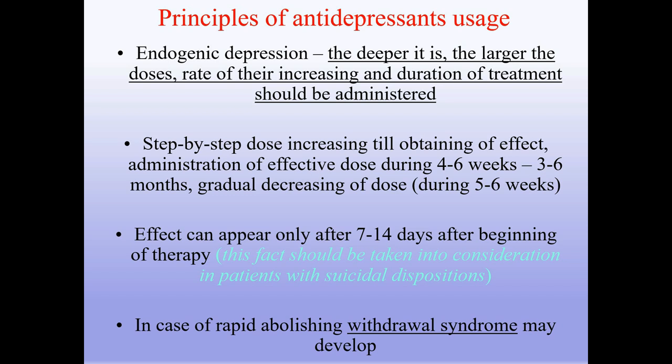Principles of antidepressant usage. For endogenous depression, the deeper it is, the larger the doses, rate of increase, and duration of treatment. Step-by-step dose increasing until obtaining effect. Administration of effective dose during 4–6 weeks, then 3–6 months. Gradual decreasing of dose during 5–6 weeks. Effect can appear only after 7–14 days after beginning of therapy — this should be considered in patients with suicidal dispositions. Rapid abolishment may lead to withdrawal syndrome.